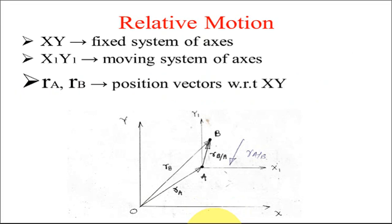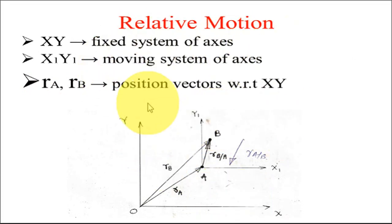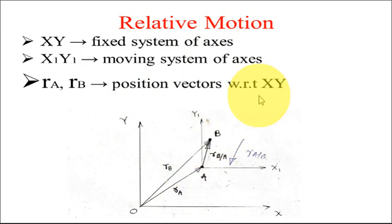Here we have a figure in which the relative position of B with respect to A is represented, where x and y are the fixed system of axes, x1 and y1 are the moving system of axes, and ra and rb represent the position vectors of objects A and B with respect to x, y. In the same way we can represent the relative velocity of B with respect to A, and even the relative acceleration of B with respect to A.